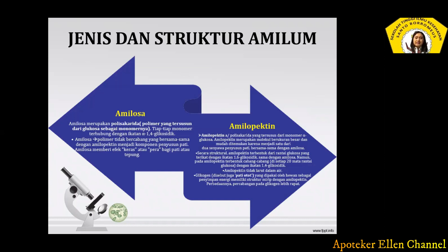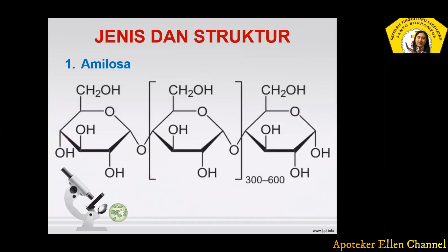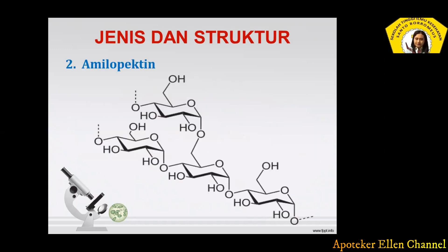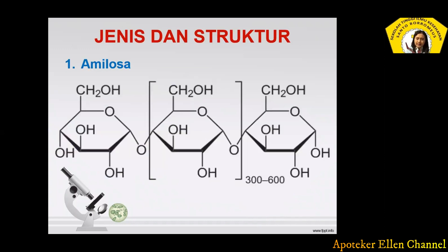Namun pada amilopektin terbentuk cabang-cabang di setiap 20 mata rantai glukosa dengan ikatan 1,4-glikosidik. Sama seperti amilosa, dia juga tidak larut dalam air. Glikogen disebut juga dengan pati otot yang dipakai oleh hewan sebagai sumber penyimpan energi, memiliki struktur sama dengan amilopektin. Perbedaannya, percabangan di glikogen jauh lebih rapat dibandingkan dengan amilopektin. Ini struktur dari amilosa, seperti ini. Dan yang ini adalah amilopektin — lihat perbedaannya.